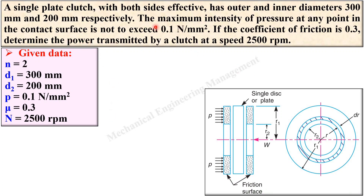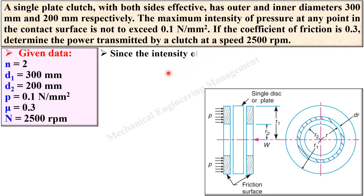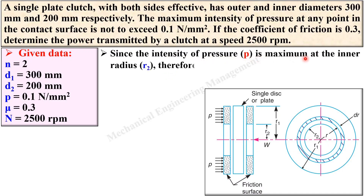Now look at this important word: here it is written 'the maximum intensity of the pressure.' From that you can understand you have to assume the uniform wear condition. If the maximum intensity of the pressure is given, then obviously you have to assume the uniform wear theory. In the uniform wear theory, the intensity of pressure is always maximum at the inner radius.